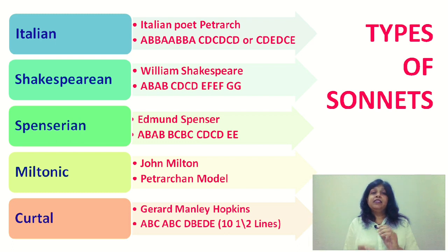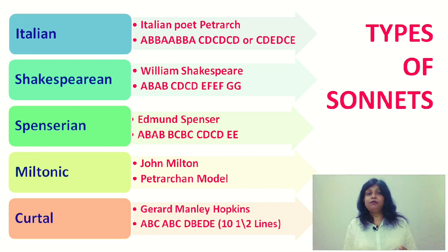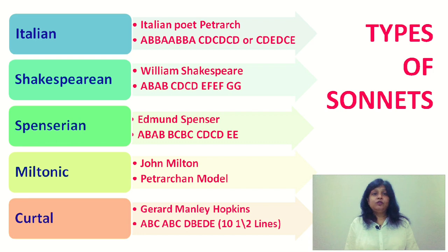That means he evolved the tradition of writing sonnets in octave and sestet. The octave has the rhyme scheme A, B, B, A, B, A, B, A, and then there is the sestet which has the rhyme scheme C, D, C, D, C, D or C, D, E, D, C, E. So he wrote them in octave and sestet form.